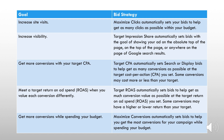Then you have another automated bidding strategy, which is ROAS — return on ad spend. Google asks how much returns are you expecting, and will try to show your ad in such a manner that you get maximum returns. So basically for returns, that means it has to give you conversions — almost very similar to maximize conversions.